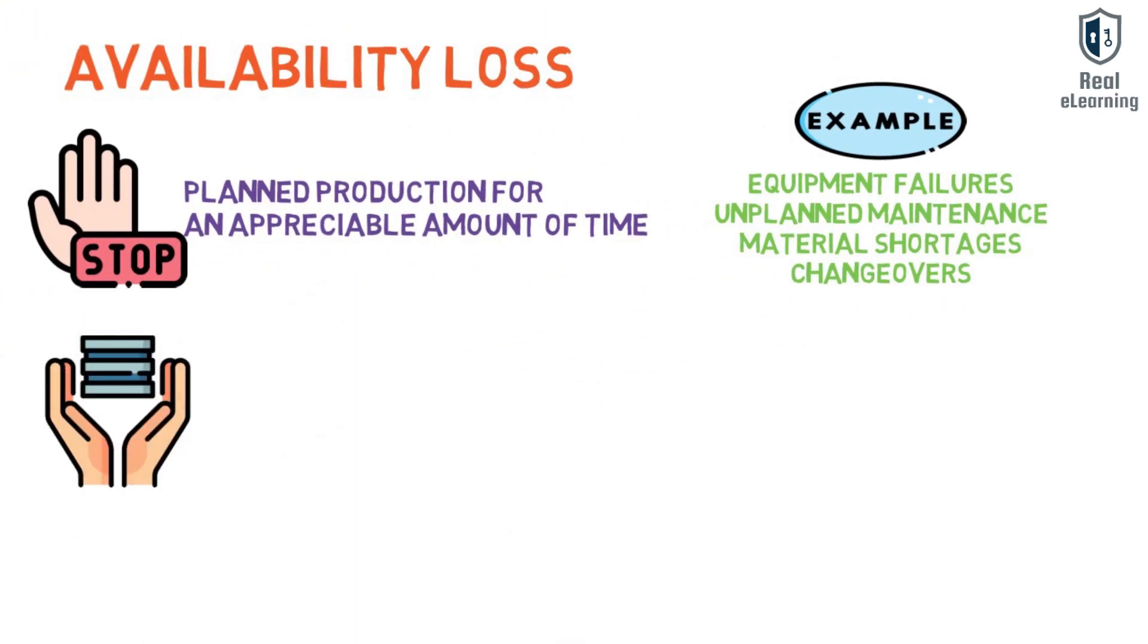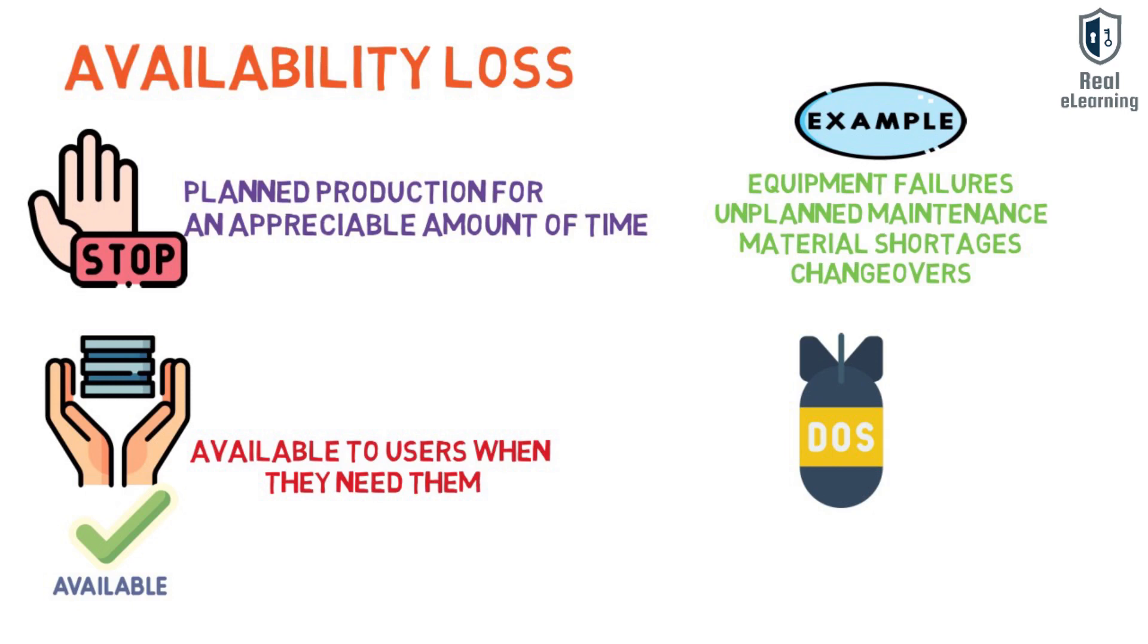Availability guarantees that systems, applications, and data are available to users when they need them. The most common attack that impacts availability is denial of service in which the attacker interrupts access to information, systems, devices, or other network resources.